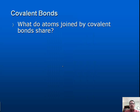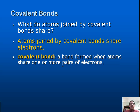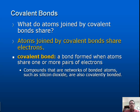Covalent bonds — what do atoms joined by covalent bonds share? Atoms joined by covalent bonds share electrons, specifically those outermost valence electrons. A covalent bond is a bond formed when atoms share one or more pairs of electrons — we can share more than just one electron, we can share several. Compounds that are networks of bonded atoms, such as silicon dioxide, are also covalently bonded.